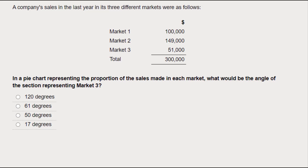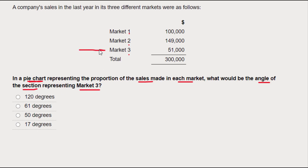This is a fun little question about pie charts. We're asked a problem-solving question: if there's a pie chart representing the proportion of sales made in each of three markets — one, two, three — what would be the angle of the section representing market three? That's the important one we want to look at.